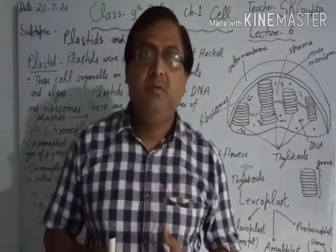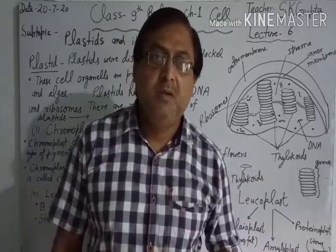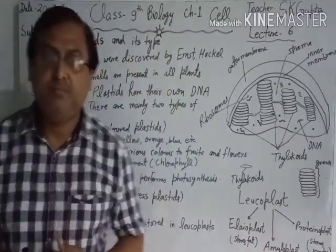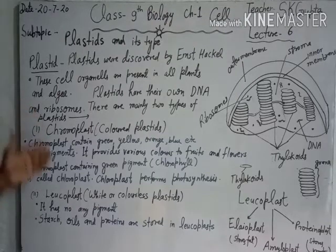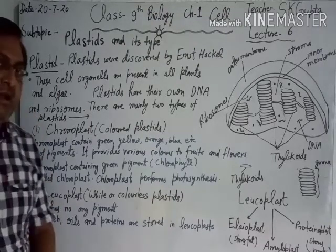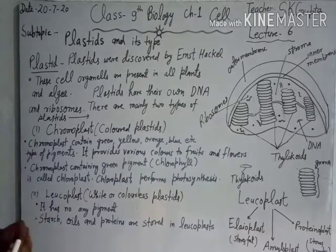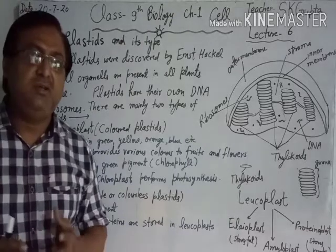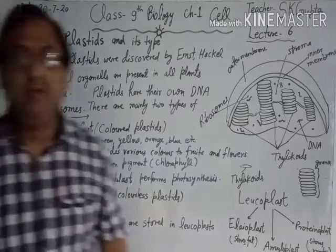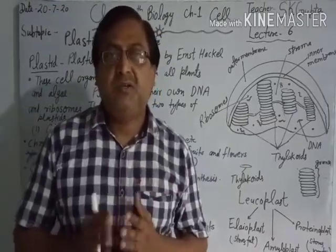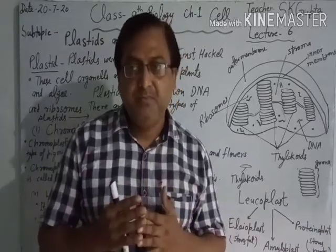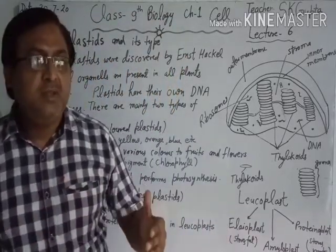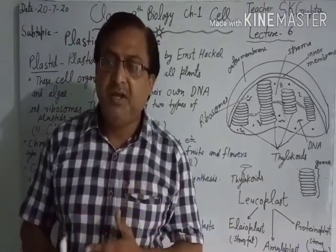Plastids contain their own DNA and ribosomes, just like mitochondria. Now we have to discuss chromoplasts and leucoplasts. Chromoplasts are also called colored plastids.